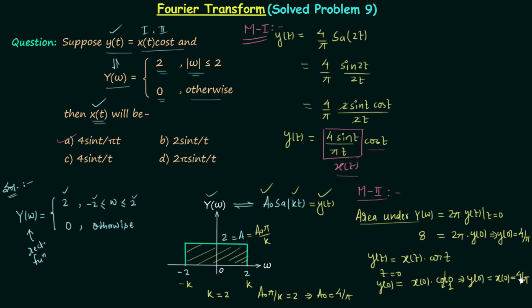So y(0) equals x(0), and they are both equal to 4/π. Therefore x(0) = 4/π. In option A, when you put t = 0, sin(t)/t becomes 1, and we are left with 4/π. This confirms option A is the correct option. That is Method 2 to solve this question. This is all for this lecture — if you have any doubts, you may ask in the comment section. See you in the next one.